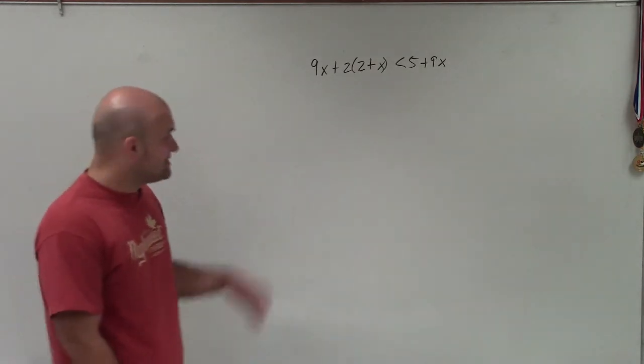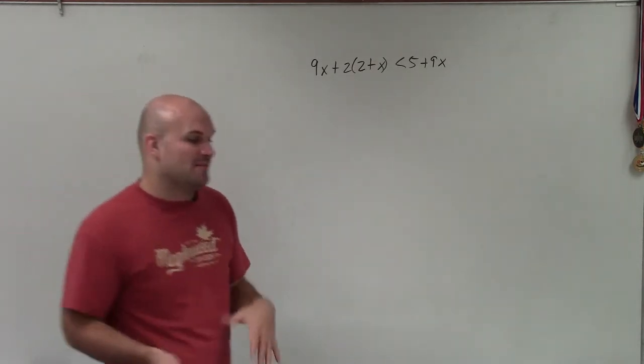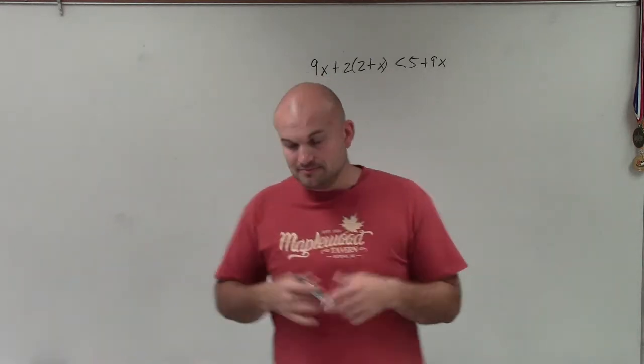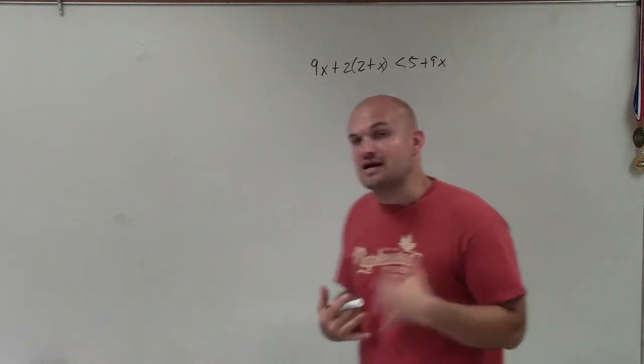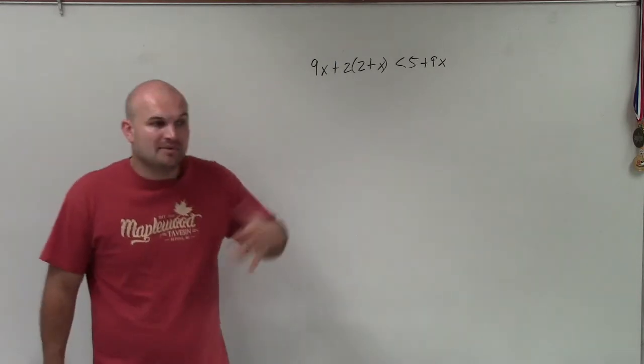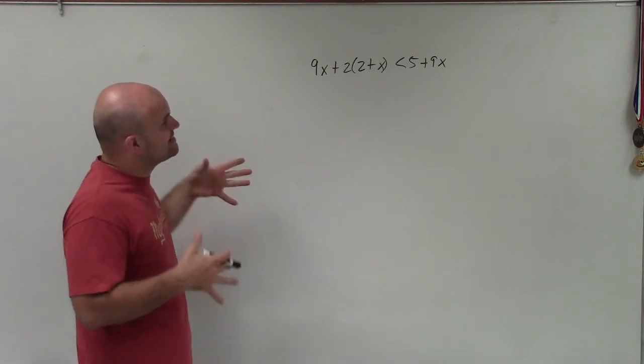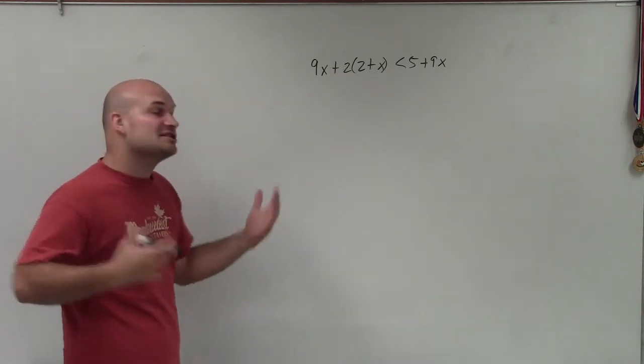Now, you can see there's a couple different steps we want to do. And remember, when we're solving a linear inequality, we're going to treat it just like a linear equation. So we're going to use our inverse operations as well as our properties of equality, but now they're for an inequality. So the first thing we want to do is simplify both sides and then get the x's to the same side.